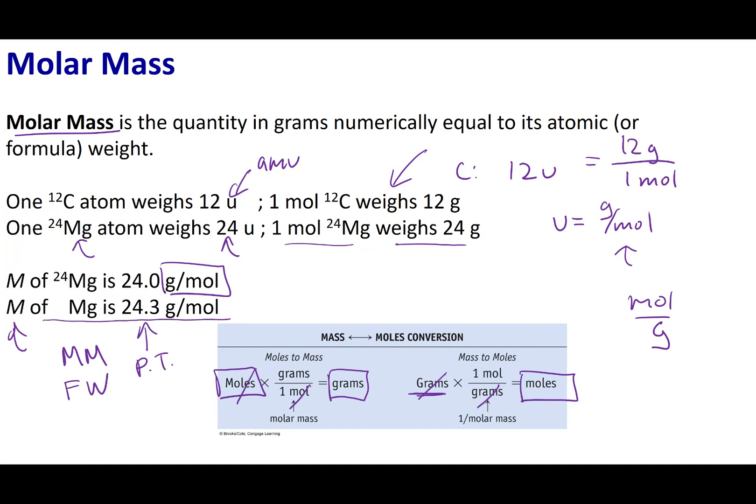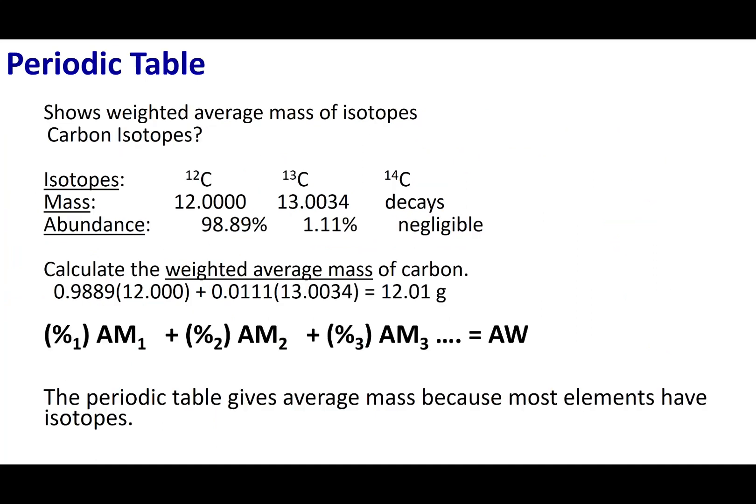The first question you have is how did they calculate this number, and what is this number? On the periodic table, what you guys will see along with the atomic number is something called the atomic weight. What the atomic weight does, it takes into account the various number of types of atoms we have for a particular element.